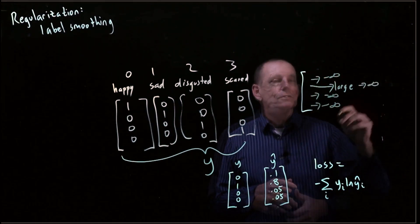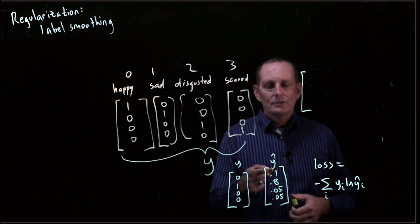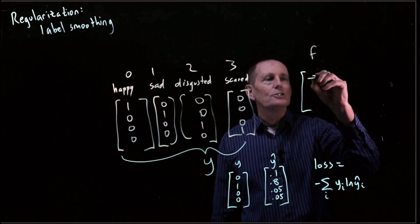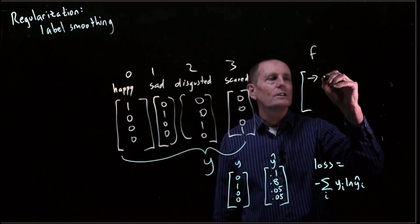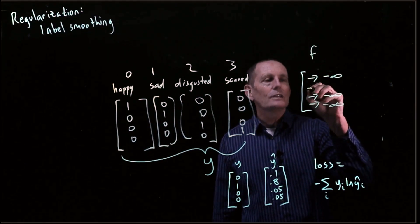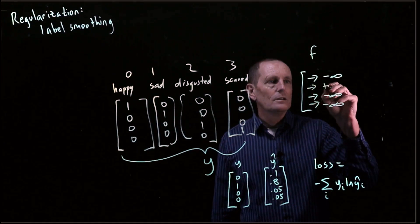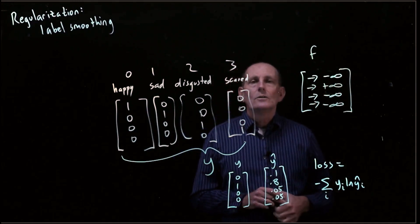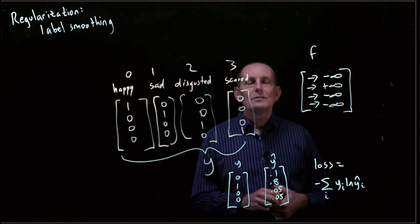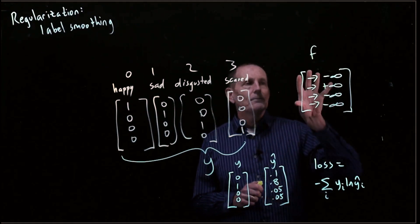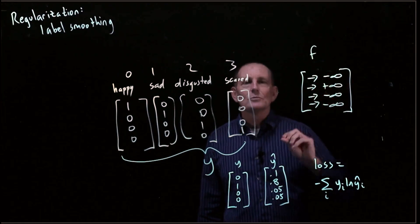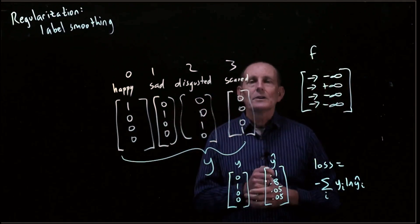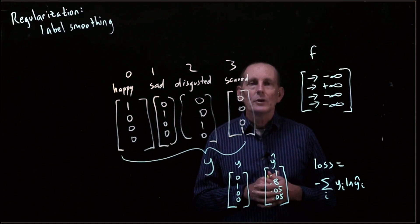The second output is going towards positive infinity. If we're driving y-hat so that all but one go to 0 and one goes to 1, what that's really doing to the output of f is driving the non-matching elements towards negative infinity and driving the one that matches the one-hot towards positive infinity. This tends to cause the model to overfit — it always tries to push more and more, causing the network weights to grow bigger and bigger.